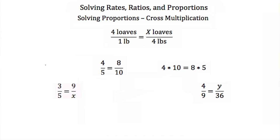How did I know I had to make 16 loaves of bread? I knew I needed 1 pound of flour per 4 loaves, and I had 4 pounds of flour. But how did I solve this proportion? Well, there's a simple method called cross multiplication. If you have two ratios — here I have 4 fifths and 8 tenths — and these are in the same proportion, I can show you that by using cross multiplication.